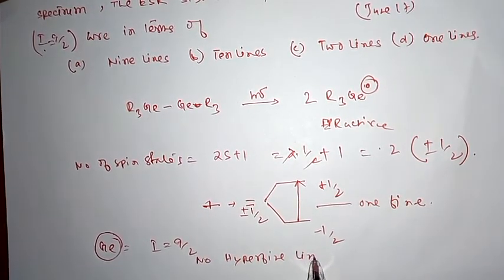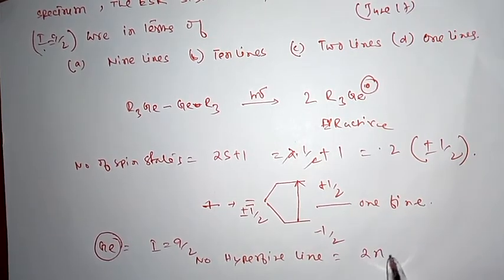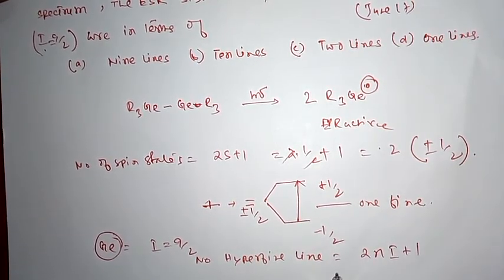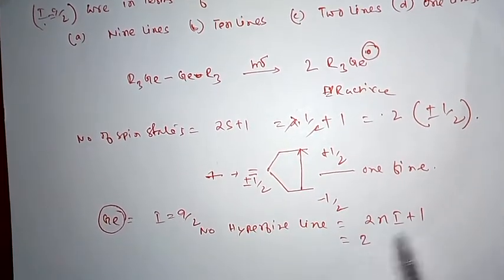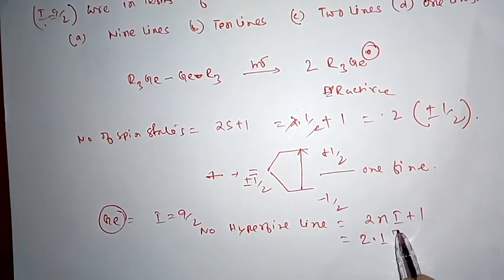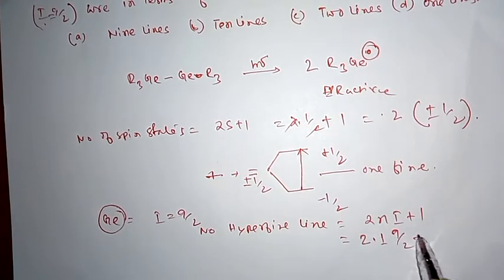Hyperfine lines are equal to 2 times nI plus 1, so this will be one nucleus, I is 9/2 plus 1.